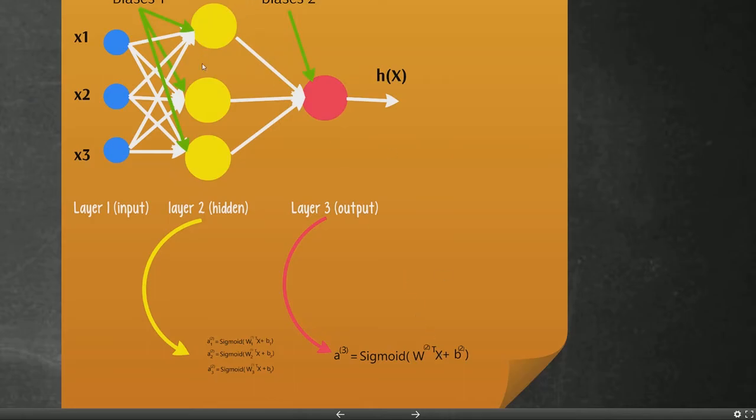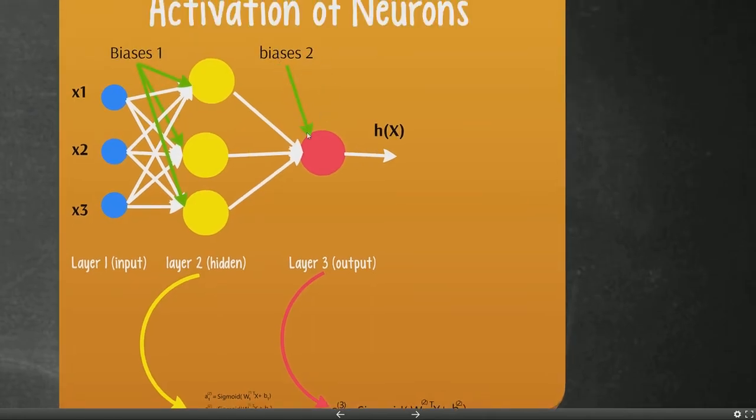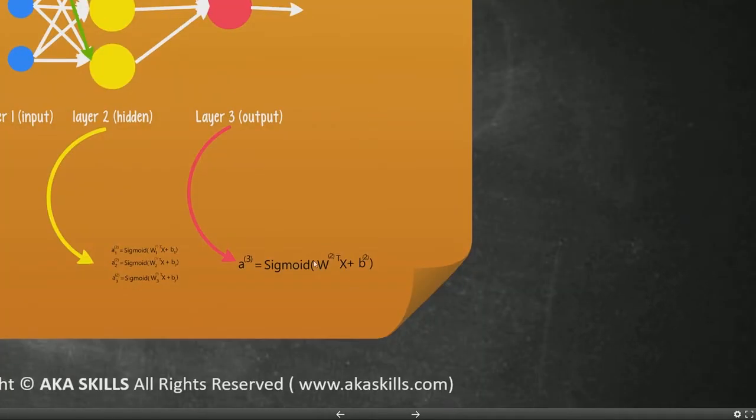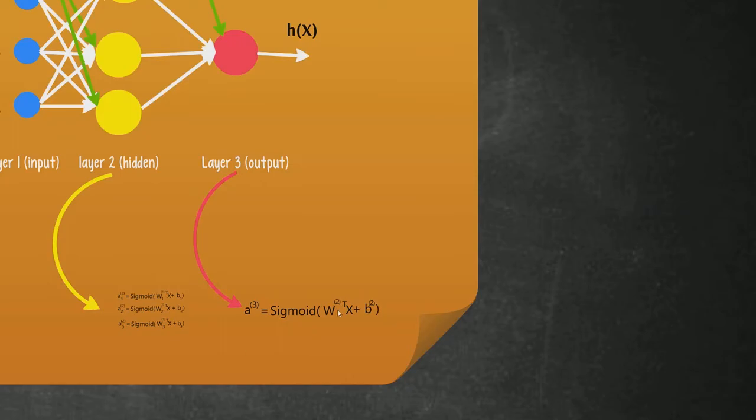So we multiply the set of weights, these, with the output of these three cells, plus the bias 2 of the second set of biases, which is only one bias, which is this one. This one. And then that's how we can compute the output for layer three.